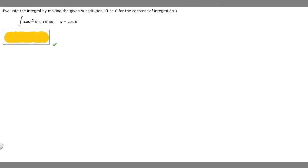So in this problem we're told to evaluate the integral by making the given substitution. Use C for the constant of integration. Then we're given the integral of cosine of theta squared times sine of theta times d theta. We're told that u is equal to the cosine of theta.